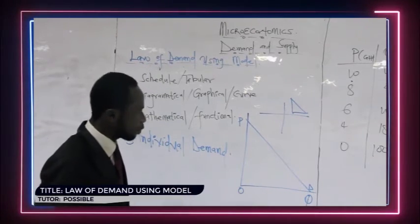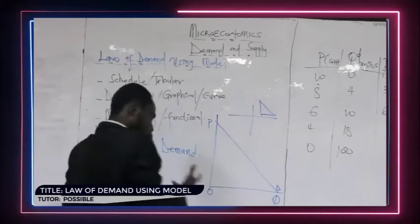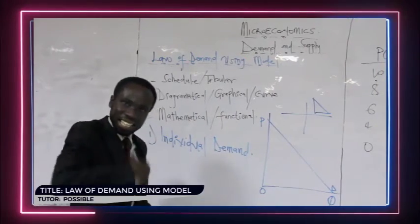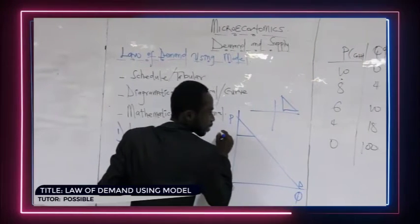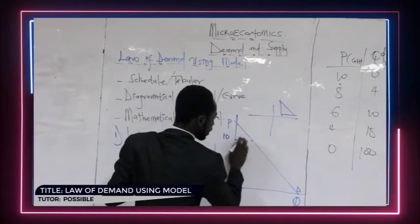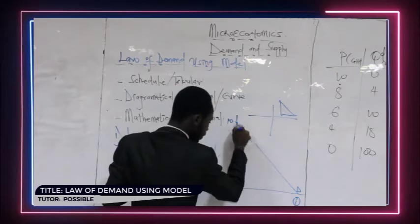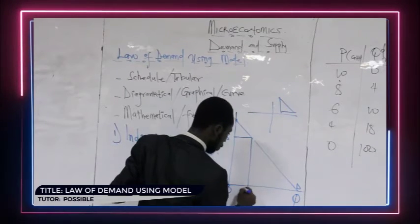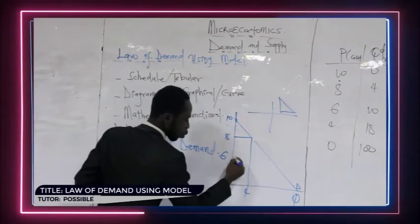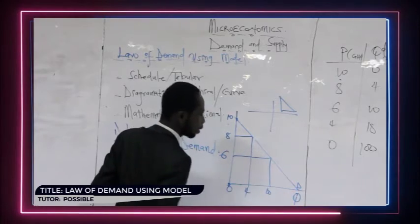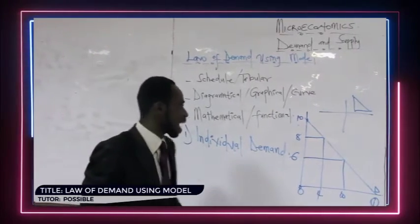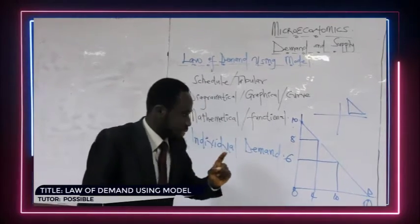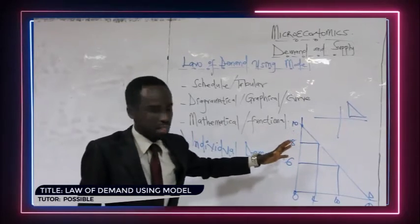Now let us verify whether the diagrammatic demand curve also proves the law of demand. When price is 10 Ghana cedis quantity demanded is zero; when price came down to 8 Ghana cedis quantity demanded became 4 units; when price came down to 6 Ghana cedis quantity demanded came up to 10 units — and so on. So we can see that the demand curve for individual demand also proves the law of demand.